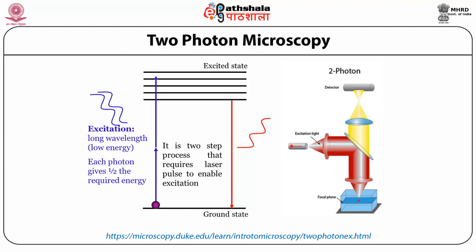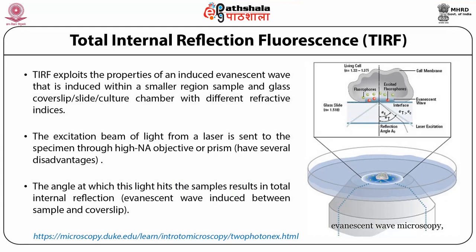In two-photon microscopy, two low-energy photons each contribute half the energy needed to move the fluorophore from ground state to excited state. Once in the excited state it returns to the ground state, emitting longer-wavelength light. Because the excitation is confined to the focal plane in a thick specimen, we can precisely determine where the signal is coming from.